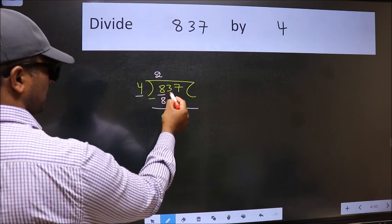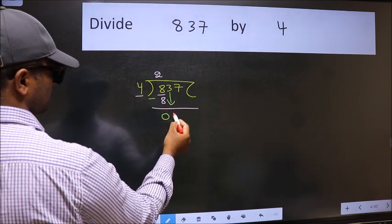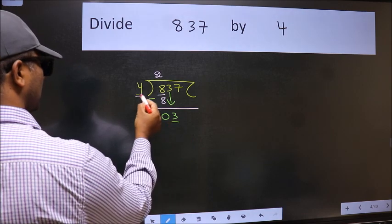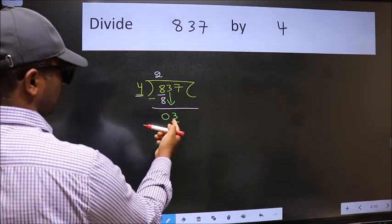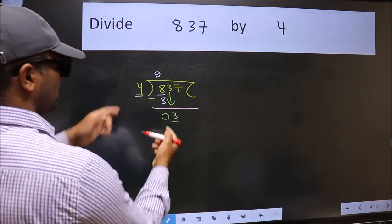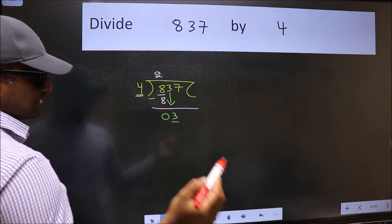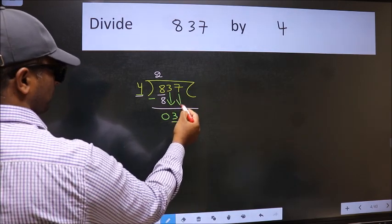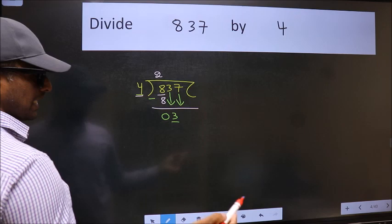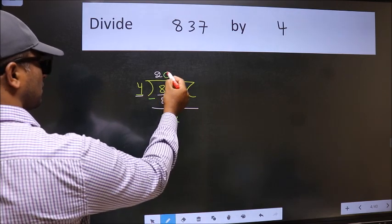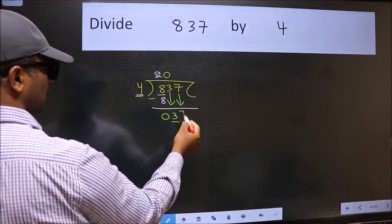After this bring down the beside number. So 3 down. Now here we have 3 and here 4. 3 is smaller than 4. So we should bring down the second number. And the rule to bring down second number is we should put 0 here. Then only we can bring this number down.